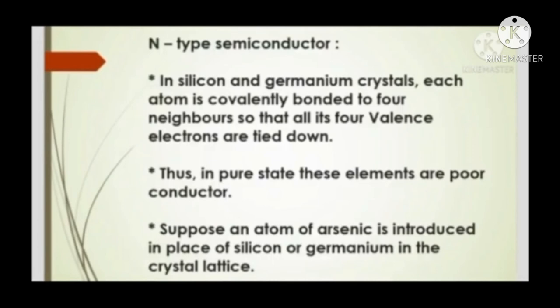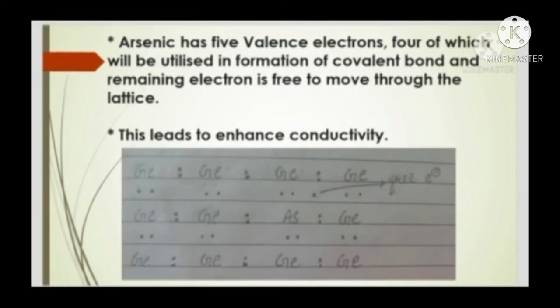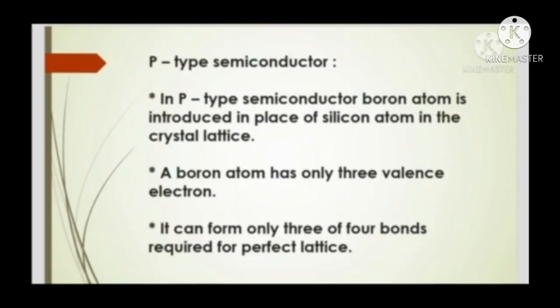N-type semiconductor: In silicon and germanium crystals, each atom is covalently bonded to four neighbors so that all four valence electrons are tied down, making them poor conductors in pure state. When an atom of arsenic is introduced into the crystal lattice in place of silicon or germanium, arsenic has five valence electrons — four are utilized in forming covalent bonds and the remaining one electron is free to move throughout the lattice, enhancing conductivity.